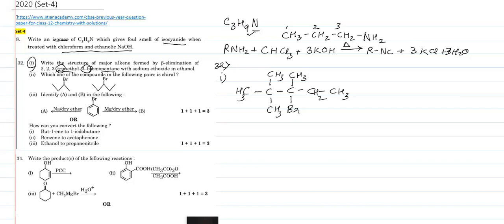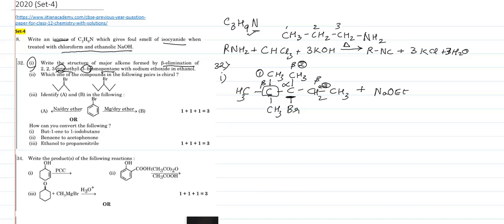Let's talk about alpha, beta, and gamma carbon atoms. The bromine is attached to the alpha carbon. The carbon atoms attached to the alpha carbon are the beta carbons — we have three beta carbon atoms. When this molecule reacts with sodium ethoxide (NaOEt) in ethanol, it leads to beta elimination. The first beta carbon (C1 side) has no hydrogen atoms, so it cannot undergo beta elimination with the alpha carbon.